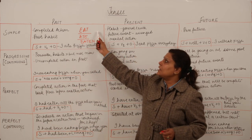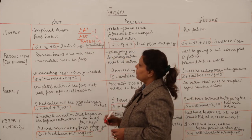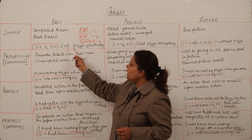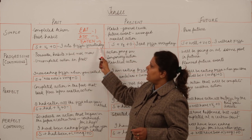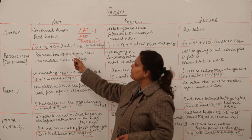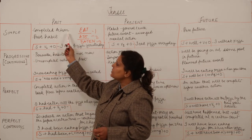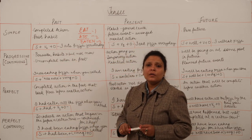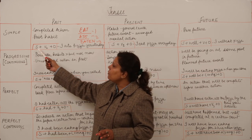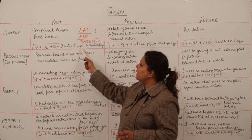Eat, ate, eaten — this is the first form, the second form, and the third form. Then the object comes — for example, pizza. 'I ate pizza yesterday.' Yesterday is your time clue from where you get to know that the action happened in the past. Simple past tense is used for completed actions or past habits which we are not bothered about at this point of time. So the form is: subject + second form of the verb (ate) + object.